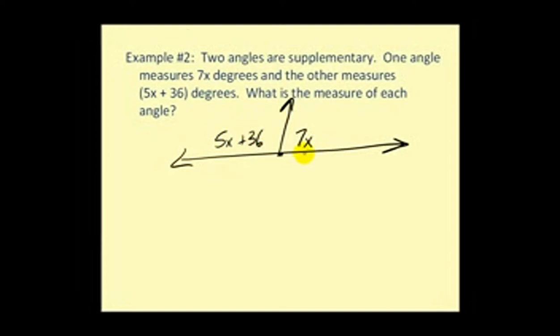So again, the sum of these two angles would now equal 180 degrees. So we'd have 5x plus 36 plus 7x equals 180. So we solve this equation.